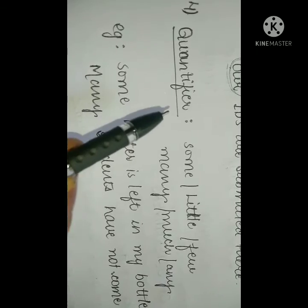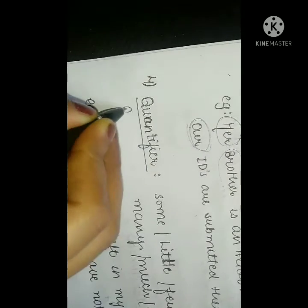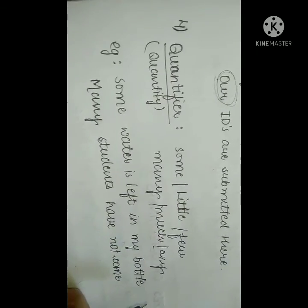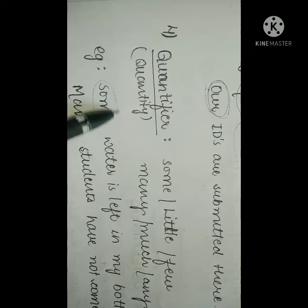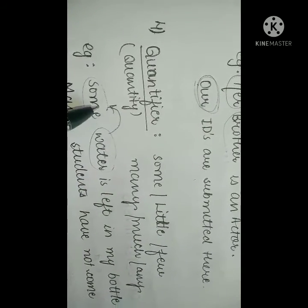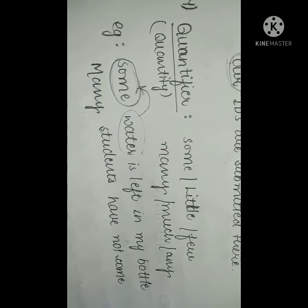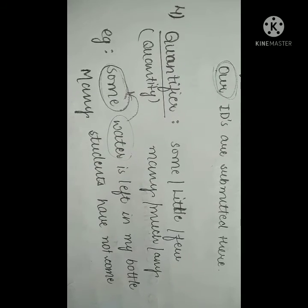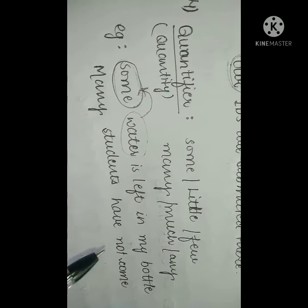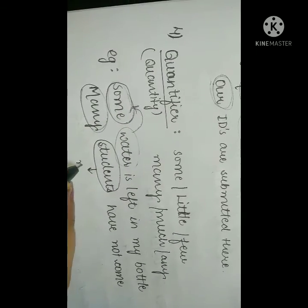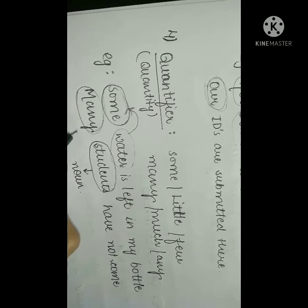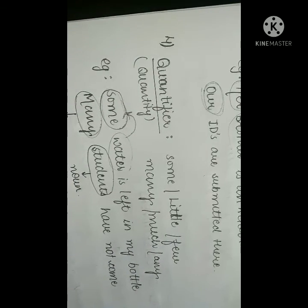And the last one is quantifier. Quantifier means quantity words: some, little, few, many, much, any — these are all your quantity words, so they are quantifiers. Example: 'Some water is left in my bottle.' What have we used before the noun? Some — so this is our quantifier determiner. Another example: 'Many students have not come.' What have we used before the noun 'students'? Many — which is our quantifier determiner.